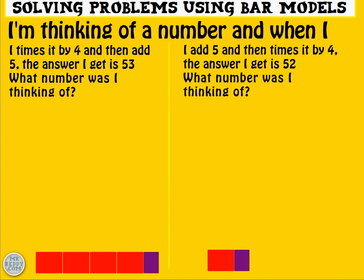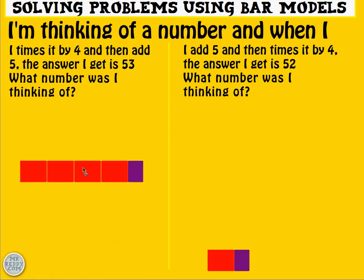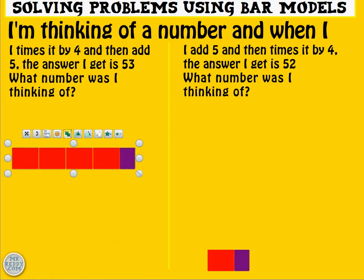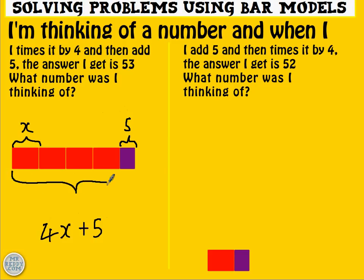They were all one-step problems. Here's a couple of two-step problems, and then we'll do a three-step problem just to finish off with some challenge. I'm thinking of a number, and I times it by 4, and then add 5. So that's x, and that's 5. What have we done algebraically? We've done 4x, add 5, and the total comes to 53. So that equals 53.